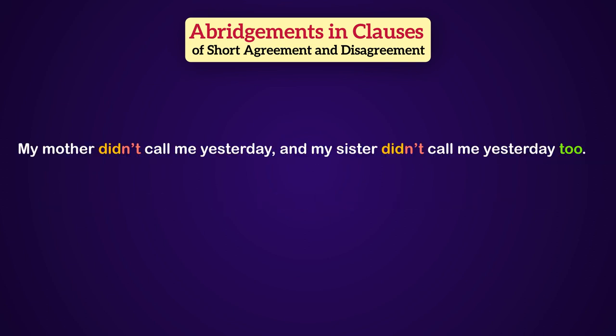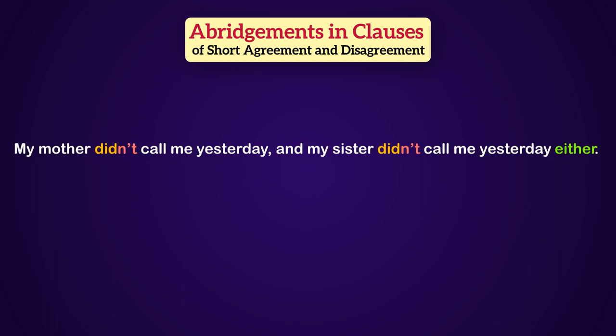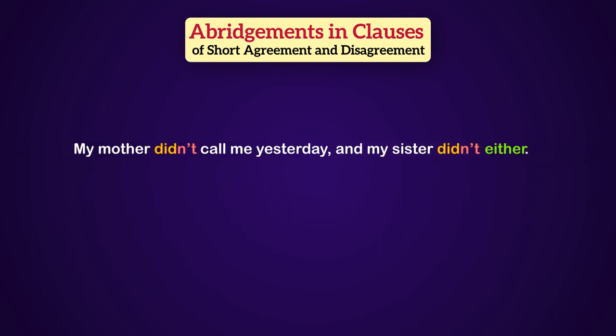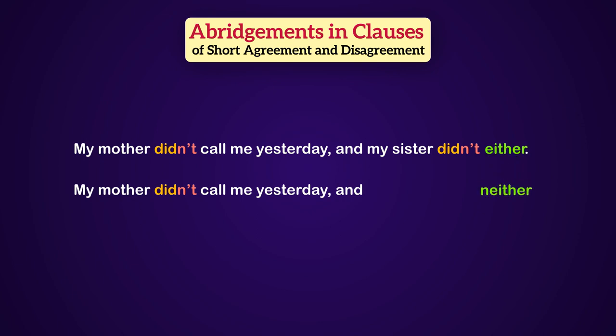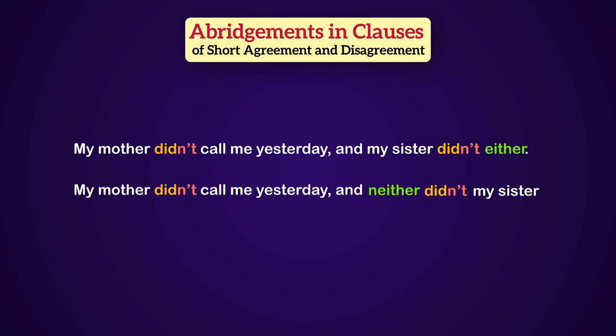What about this? My mother didn't call me yesterday, and my sister didn't call me yesterday too. Because our clauses are negative, we must change 'too' into 'either,' then abridge the whole clause with 'did': My mother didn't call me yesterday, and my sister didn't either. Now we can change it to another form: convert 'either' into 'neither,' place it at the beginning, reverse the subject and auxiliary, and remove the negative form: My mother didn't call me yesterday, and neither did my sister.